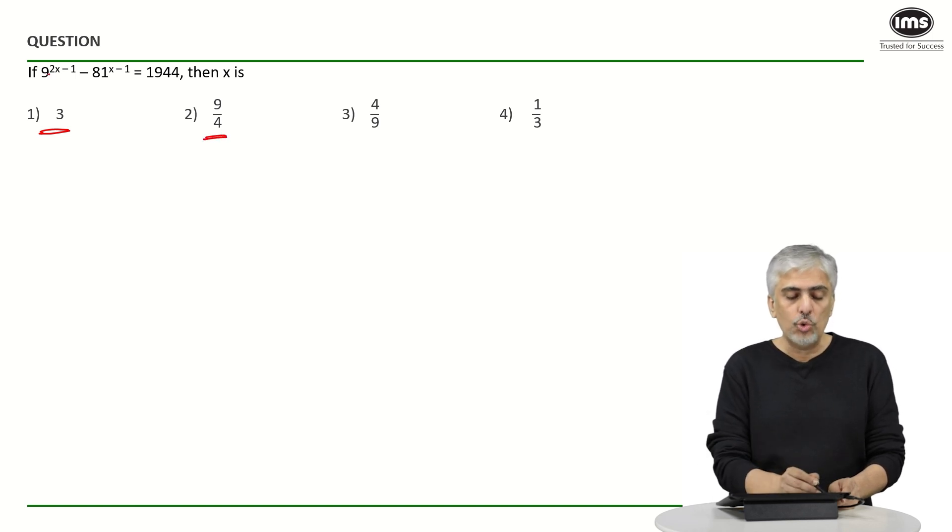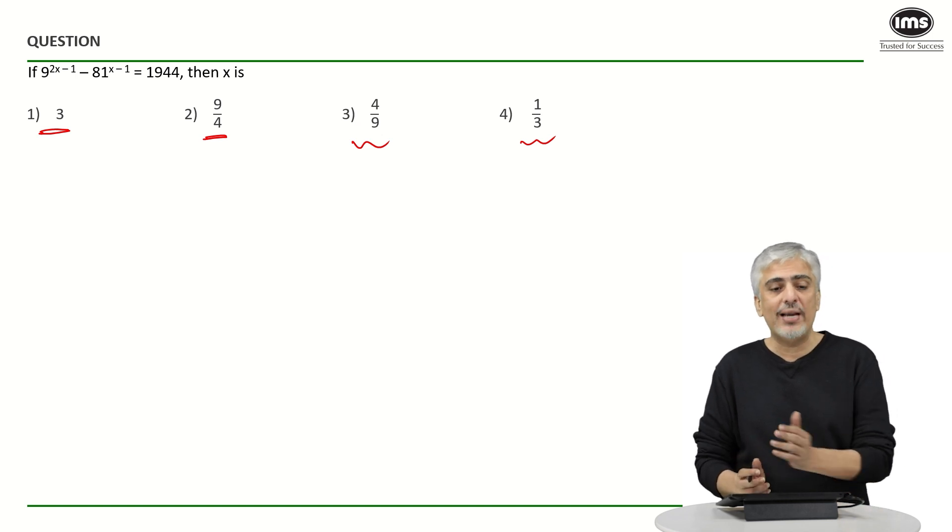Could be possible because 2 into 9 by 4 will anyway become a whole number. But yes, the 81 raised to 9 by 4 can still remain and might not be an answer. But these two definitely don't look like the answers. Why? Because if you look at it, 81 is also 3 raised to 4. So hence the chances of these two being the answer are very low.